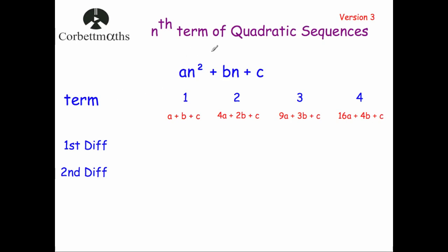In this video we're going to look at the nth term of a quadratic sequence, and this is version 3. There are many different ways to approach this topic. I sort of prefer version 1, but depending on which way your teacher taught you or which you prefer, this is just another way to do it. The nth term of a quadratic sequence is in the form an² + bn + c, which you'll probably recognise from quadratic graphs: ax² + bx + c. It's similar but just with n's.